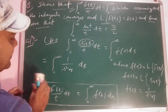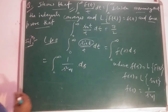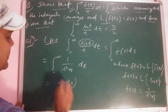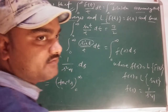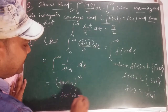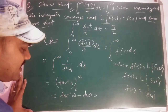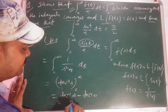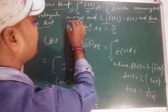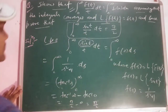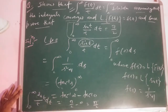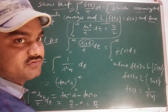The integration of 1/(s² + 1) ds gives tan⁻¹(s), with limits 0 to ∞. Putting the limits: tan⁻¹(∞) − tan⁻¹(0) = π/2 − 0 = π/2. So ∫₀^∞ (sin t / t) dt = π/2, which is what we needed to show.